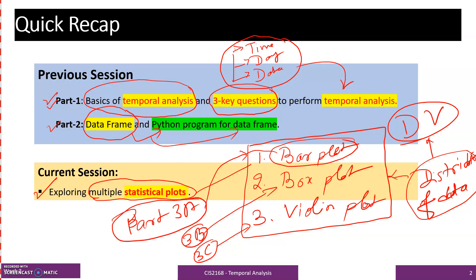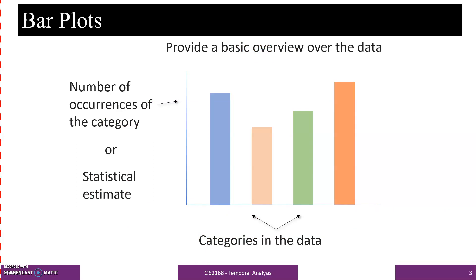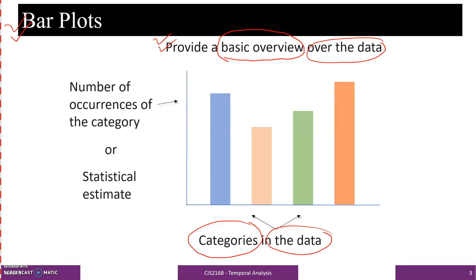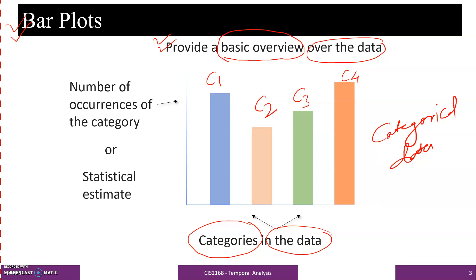In the next slide I have given a bar plot to explain the basics of bar plot. This slide represents a bar plot and it is one of the most popular graphs to visualize the data. It provides a basic overview over the data and it represents categories in the data. Here you can see 4 rectangular bars shown in this bar plot — C1 category 1, C2 category 2, C3 category 3 and C4 category 4. Bar plot represents categorical data to show the distribution of the data of an individual category.